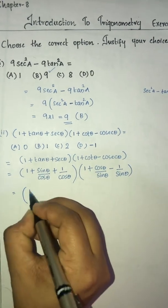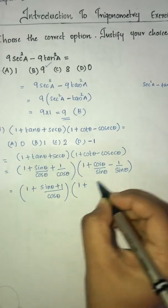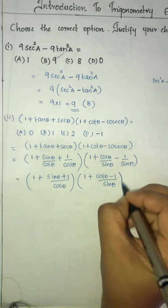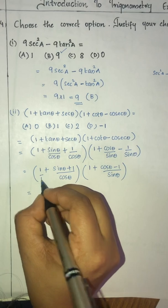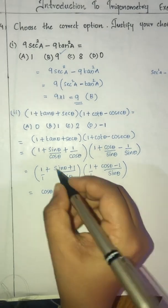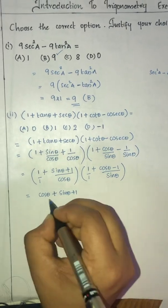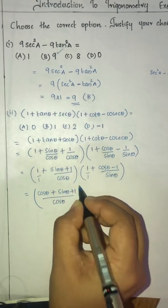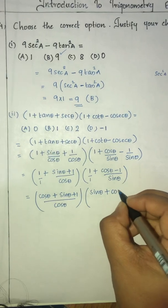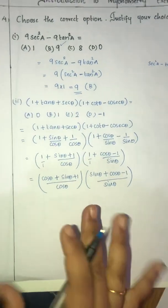Now we take the common denominator cosθ for the first bracket: (cosθ + sinθ + 1) divided by cosθ. And for the second bracket with common denominator sinθ: (sinθ + cosθ - 1) divided by sinθ.